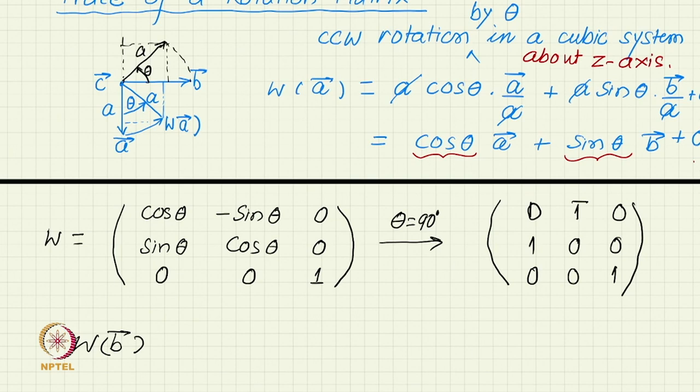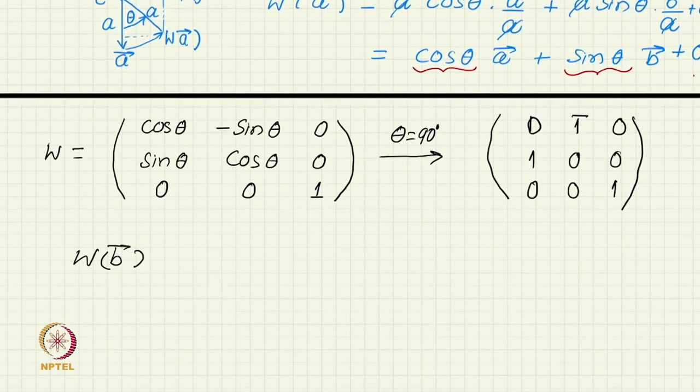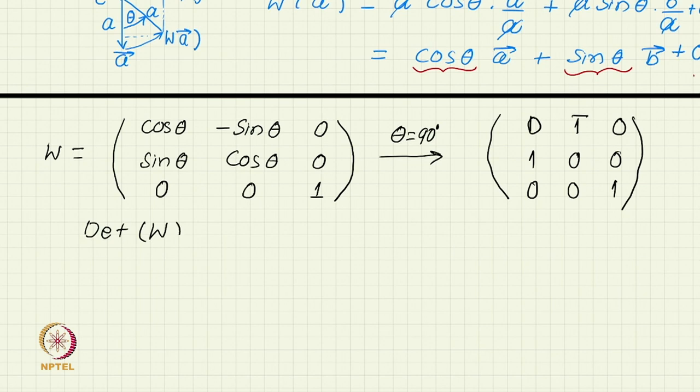This is fine. Now you can check, I will leave this as an exercise, let us not do the algebra, but it is not very difficult. You can check that even with this cos theta sin theta, the determinant W will still come out to be plus 1.